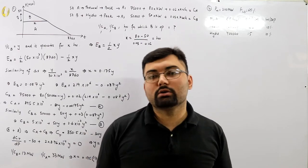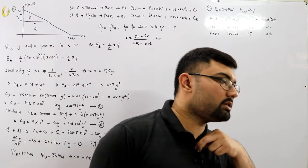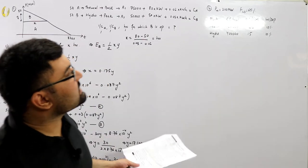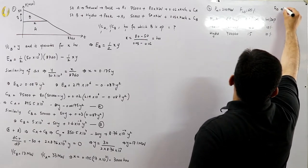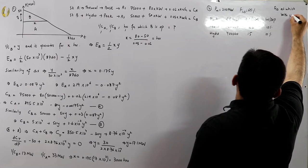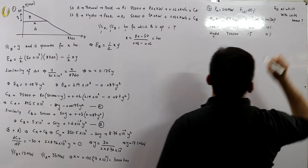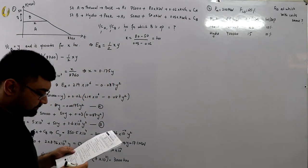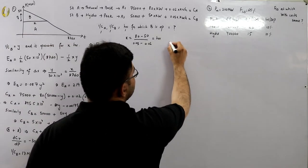We calculate costs for both options and determine which is cheaper. Part (a): calculate cost per unit for thermal and hydro at the given load factor of 65%. Part (b): find the load factor at which both costs are the same.